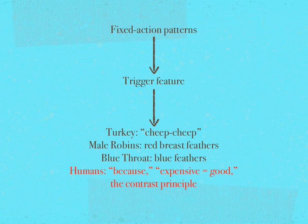You can physically experience the contrast principle by placing your right hand in a bucket of hot water and your left hand in a bucket of cold water. Then remove each hand and place them into a single bucket filled with room temperature water. The hand from the hot bucket will feel cool, and the hand from the cold bucket will feel warm — the same water feels different depending on what preceded it. Use these three weapons of influence and you will quickly realize the formula: if I do action A, action B — automatic compliance — will consistently follow.